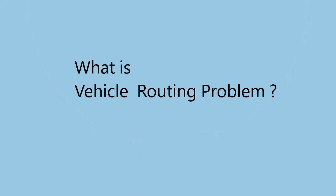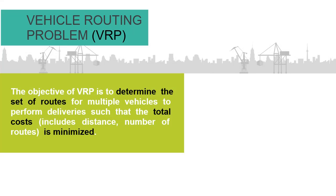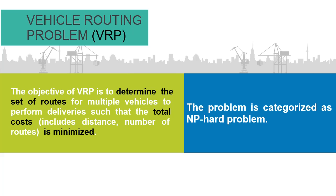We will first look at what is the vehicle routing problem, or VRP, then we will see what is the inventory routing problem and how VRP and IRP are connected. The main objective of a vehicle routing problem is to find optimal routes for customer deliveries such that the overall cost is minimized. This problem falls into the non-deterministic polynomial hard category.